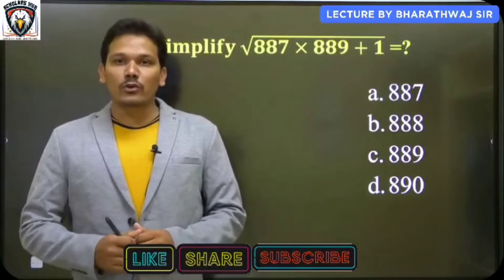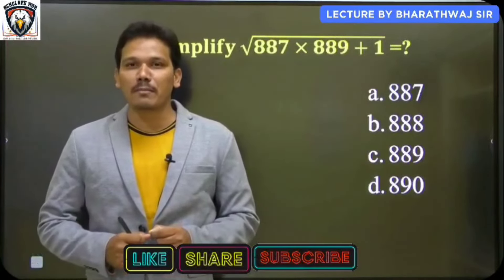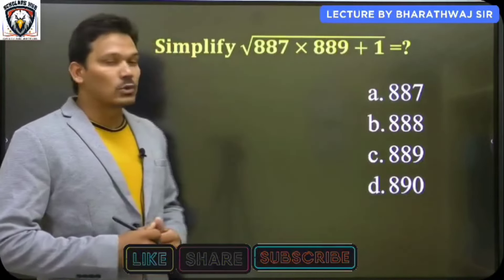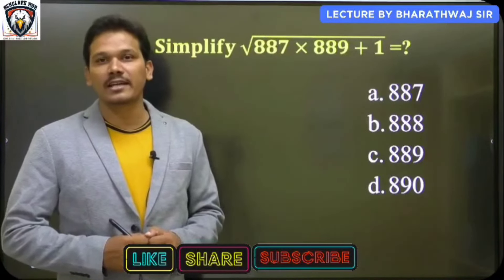Hi students. Now we are going to solve an interesting question that was asked in the previous SSC examination. The question is: simplify the value of √(887 × 889 + 1).